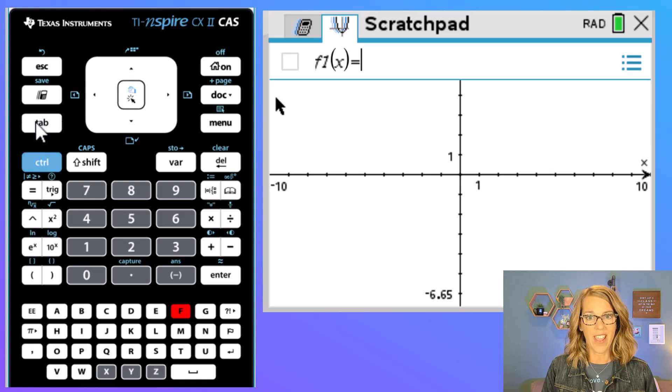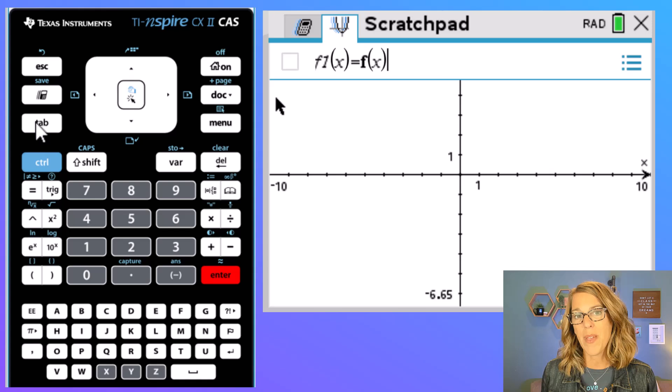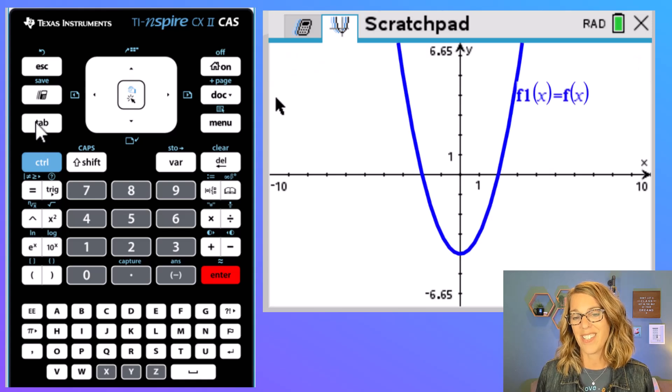Well, I really want to graph that x squared minus 4. So I'm just going to type in f of x. It will remember that we defined this as x squared minus 4.